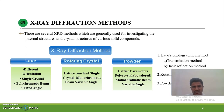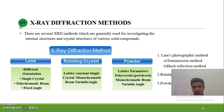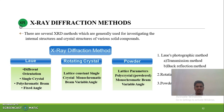X-ray diffraction methods — how can X-rays be diffracted? There are three techniques: the Laue method, the rotating crystal method, and the powder method.